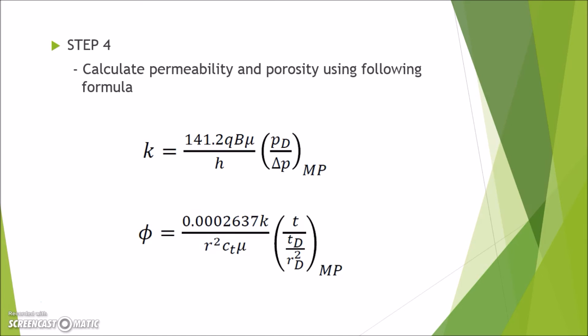When calculating the values of porosity and permeability, you might get a different values than the other. It is because when picking up the matching points, each person pick different values. And the ratio of PD over P and T over TD over RD square is different. If this case happens, I believe that the acceptable difference is about 5 to 10% from the original answer.